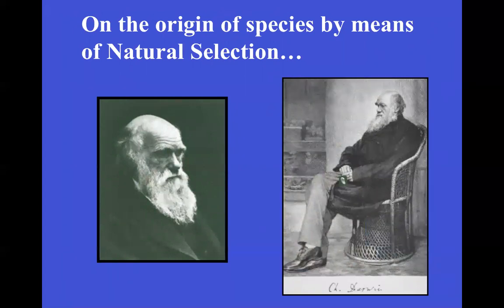In 1859, a man by the name of Charles Darwin wrote what is called 'On the Origin of Species by Means of Natural Selection.' In this paper he said that evolution is directed by natural selection — it's an editing process. The individuals in a population have certain traits, various traits, that differ them amongst each other.